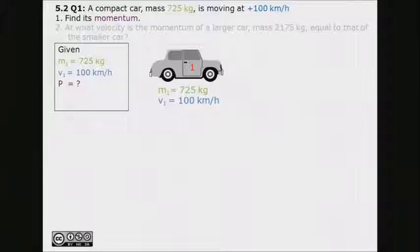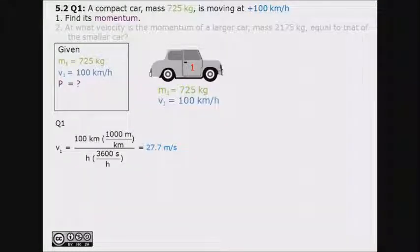Our first step would be to convert the units of the velocity given in the question from km per hour to m per second. Appropriate conversions are made and we get 27.7 m per second.